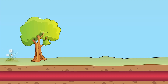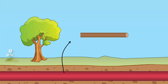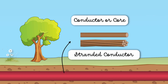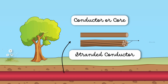In underground cables, a bare conductor line is called a core. Instead of a single solid conductor, stranded conductors are used. This means several thin wires called strands are twisted together.